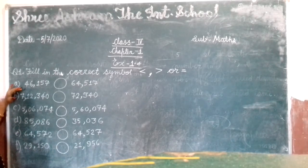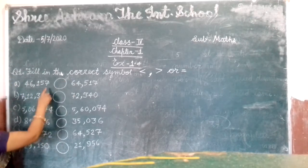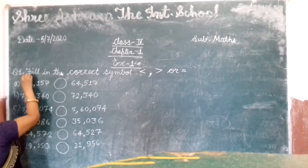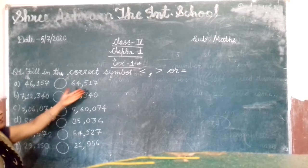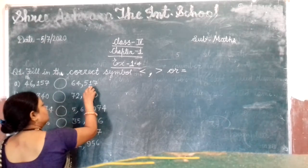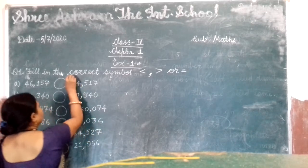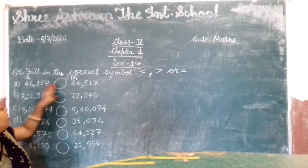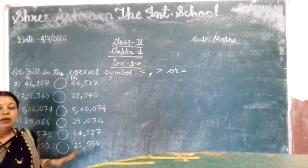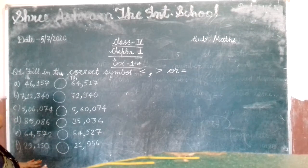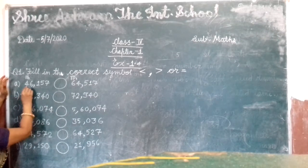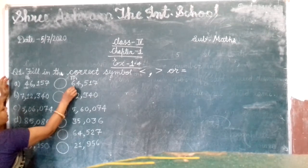First we count the digits of both sides. Counting the digits of the first number: ones, tens, hundred, thousand, ten thousand — the last digit place is ten thousand. Now count the digits of the second number: ones, tens, hundred, thousand, ten thousand. So both numbers have the ten thousand place, meaning they have equal number of digits.